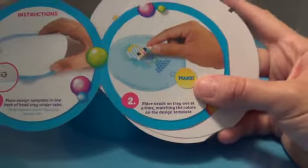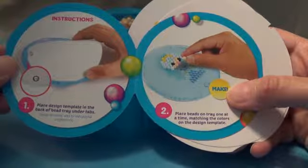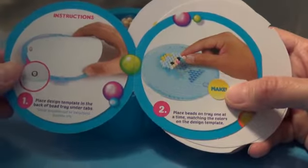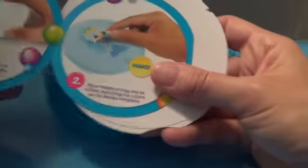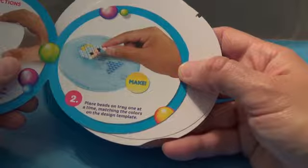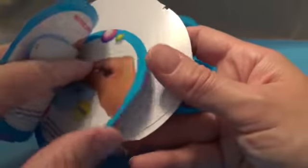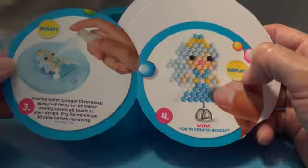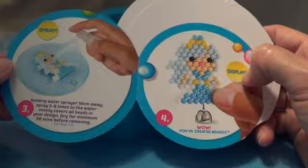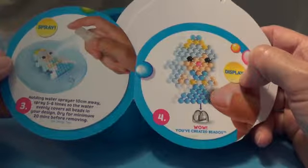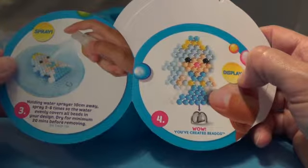Be Sweet Theme Pack Instructions. So it says, place the design template in the back of the bead tray under the tabs. Place the beads on the tray one at a time, matching the colors to the design template. Holding the spray bottle at least 10 centimeters away, spray five to six times so the water evenly covers all the beads in your design. Dry for a minimum of 20 minutes before removing.